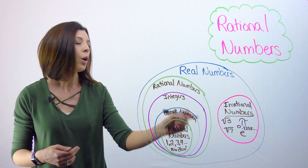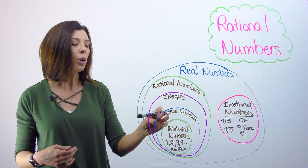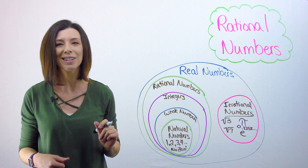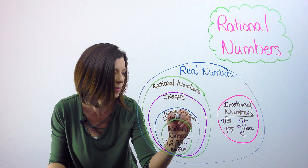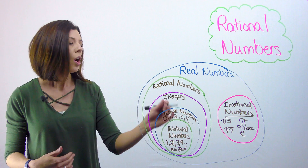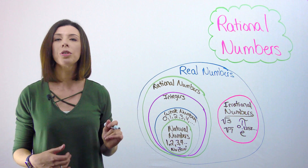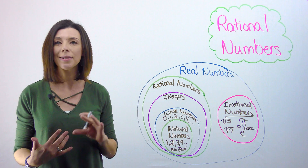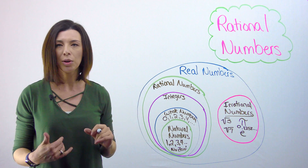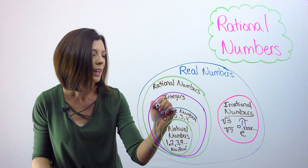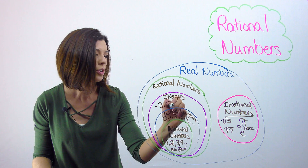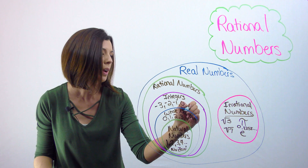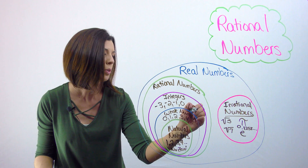That leads us to whole numbers. Whole numbers are all of our natural numbers, but now we include 0. Then we get to integers — all whole numbers and natural numbers are integers, but now we're thinking of positive and negative whole numbers. So things like negative 3, negative 2, negative 1, 0, 1, 2, 3, and so on.